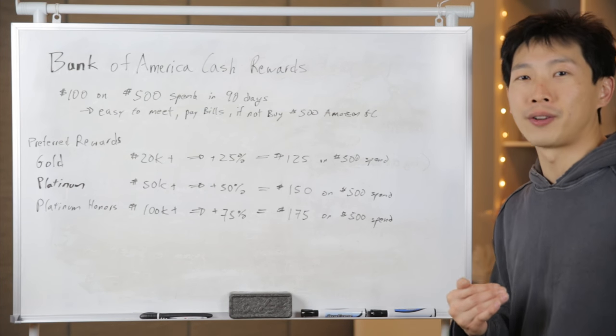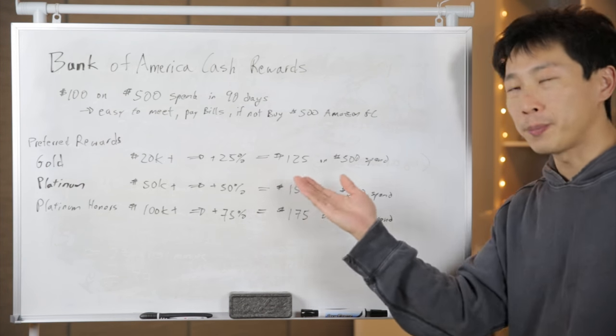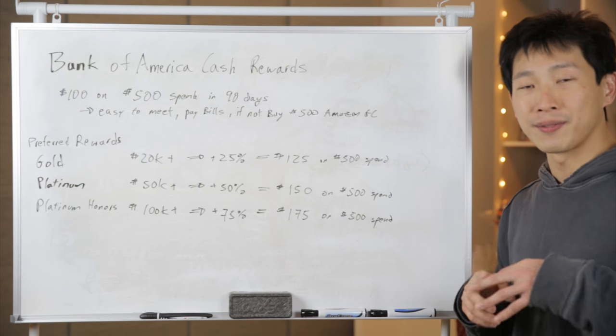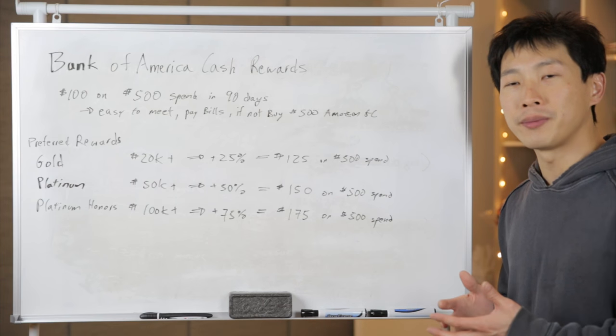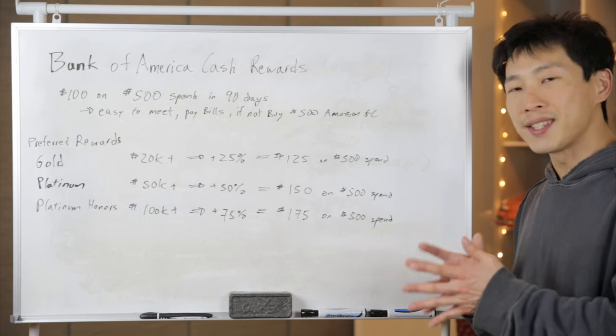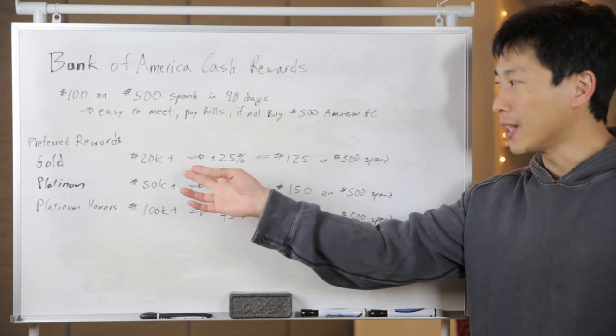Now $100 is the base amount of cash back that you can get. If you're part of this preferred rewards thing from Bank of America, you need to have their checking and savings account. If you have a certain amount of money stored in their checking and savings account all combined together, this includes investment accounts.